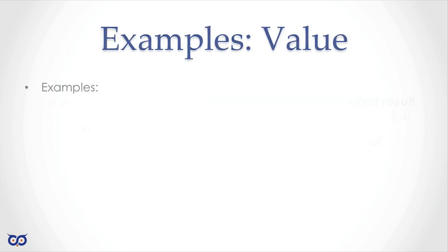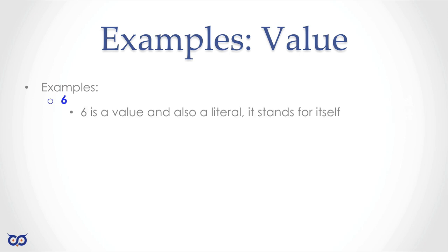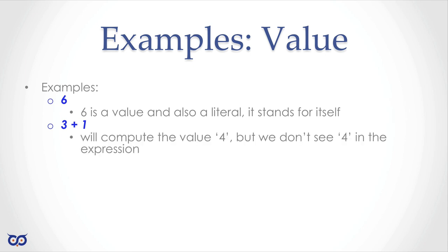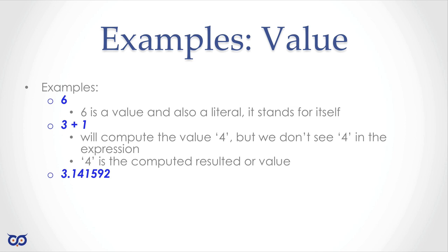The number six, for example, is a literal value — six stands for itself, it's not computed. An expression like three plus one is an expression that computes to the value four; within that expression, three and one are literals. 3.141592 is an approximate value of pi, and it's a floating-point value. We also have values like true or false, which are of type Boolean.